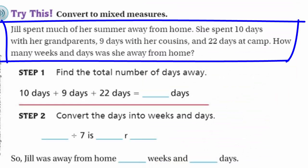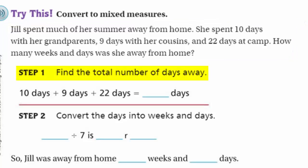Jill spent much of her summer away from home. She spent 10 days with her grandparents, 9 days with her cousins, and 22 days at camp. How many weeks and days was she away from home? Step one: find the total number of days away. We have 10 days, 9 days, and 22 days. 22 plus 10 is 32, plus 9 - that's 41 days.